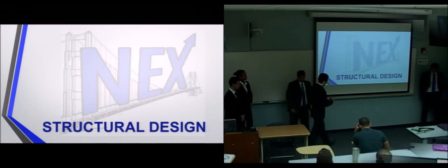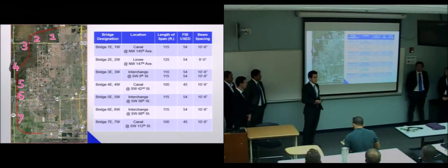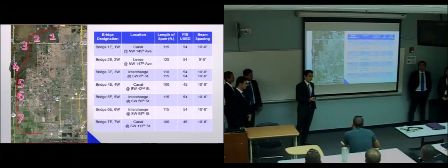So we're going to go over the structural design for the superstructure of the bridges. Each number that you see on the map represents the location of the bridge. We're going to have a total of seven bridges. And four of those bridges are going to be spanning over canals. Three of those are going to be at interchanges.